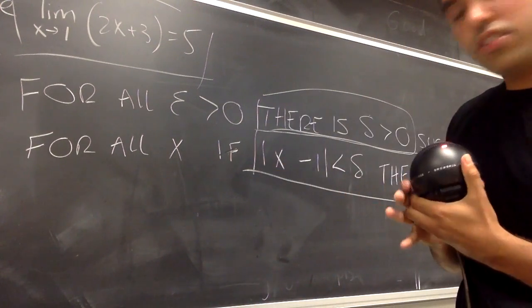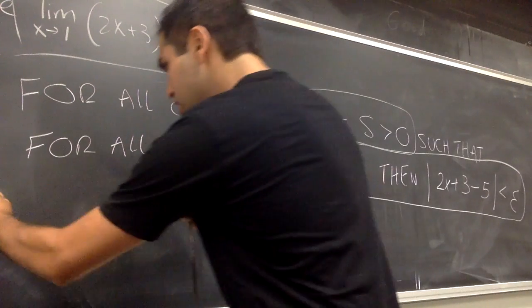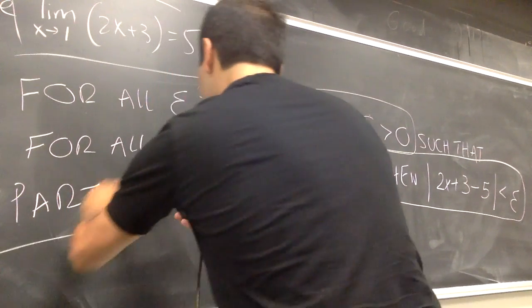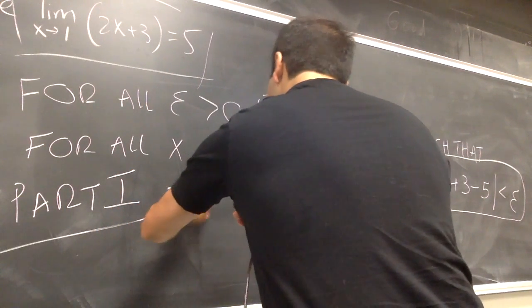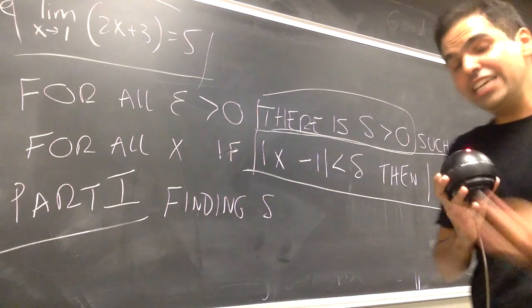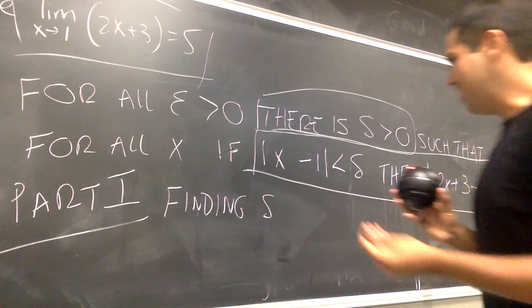And for those proofs, it usually goes into two parts. The first part is the prep work. Part one, namely, finding Delta. It's like finding Nemo, but in math, you want to find Delta.